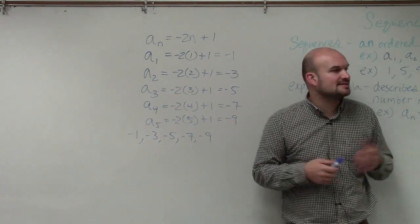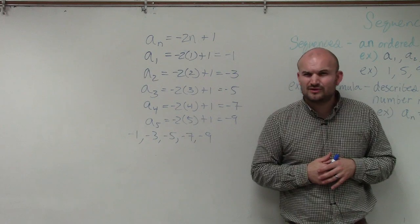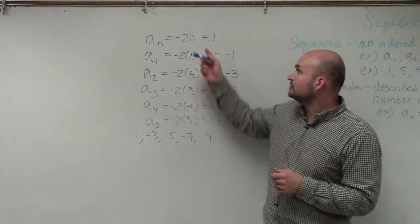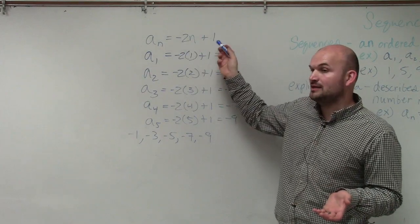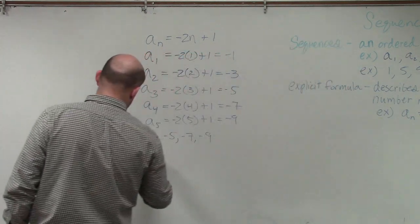However, what if I just asked, what is the 10th number in the sequence? Does anybody know that without continuing down? Well, we'd do negative 2 times 10, which is negative 20, plus 1, which would be negative 19.